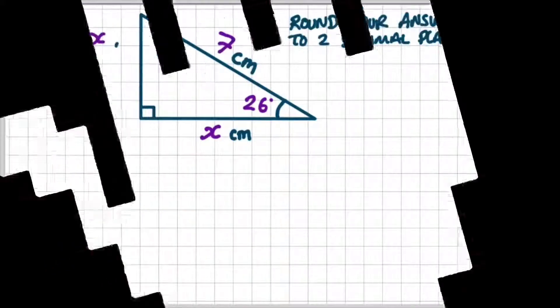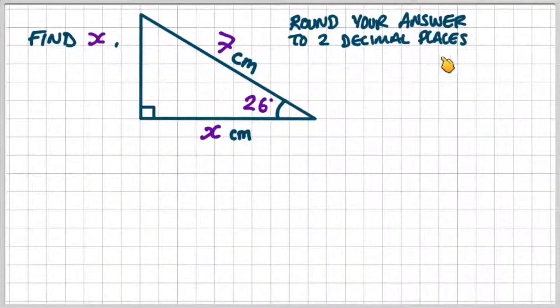Find X in the following diagram and round your answer to two decimal places. So we have one side length, which is 7 centimeters, we have a given angle, which is 26 degrees, and we need to find out this missing length, which is X centimeters.